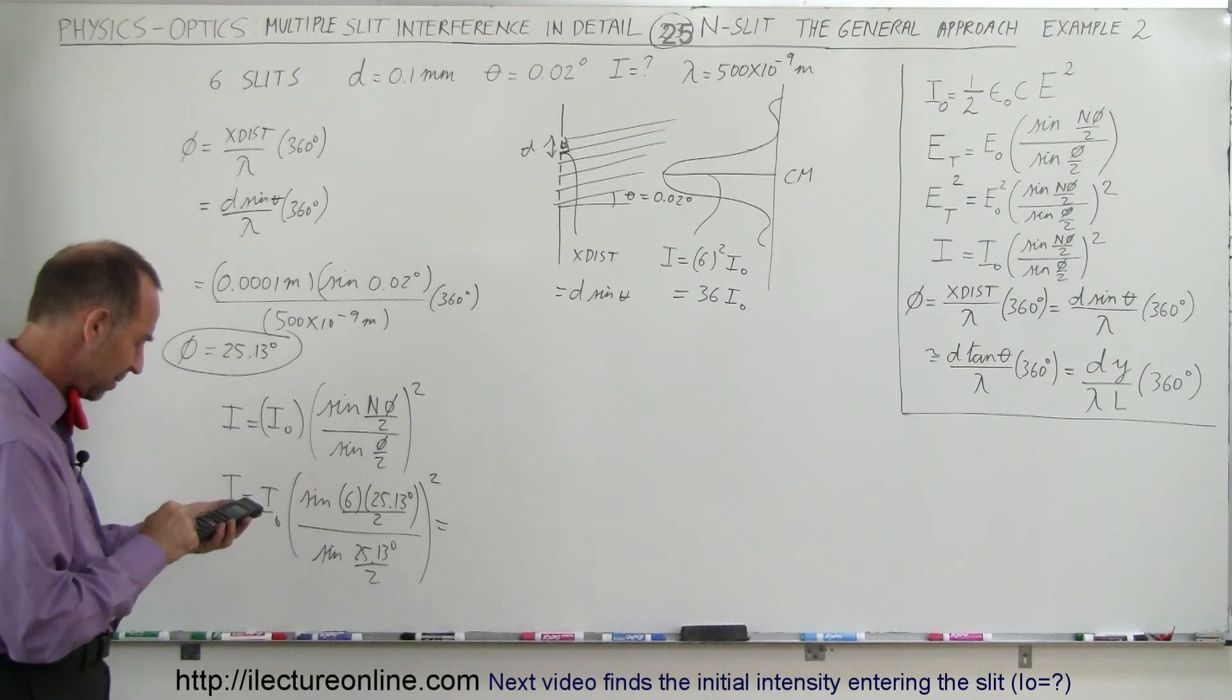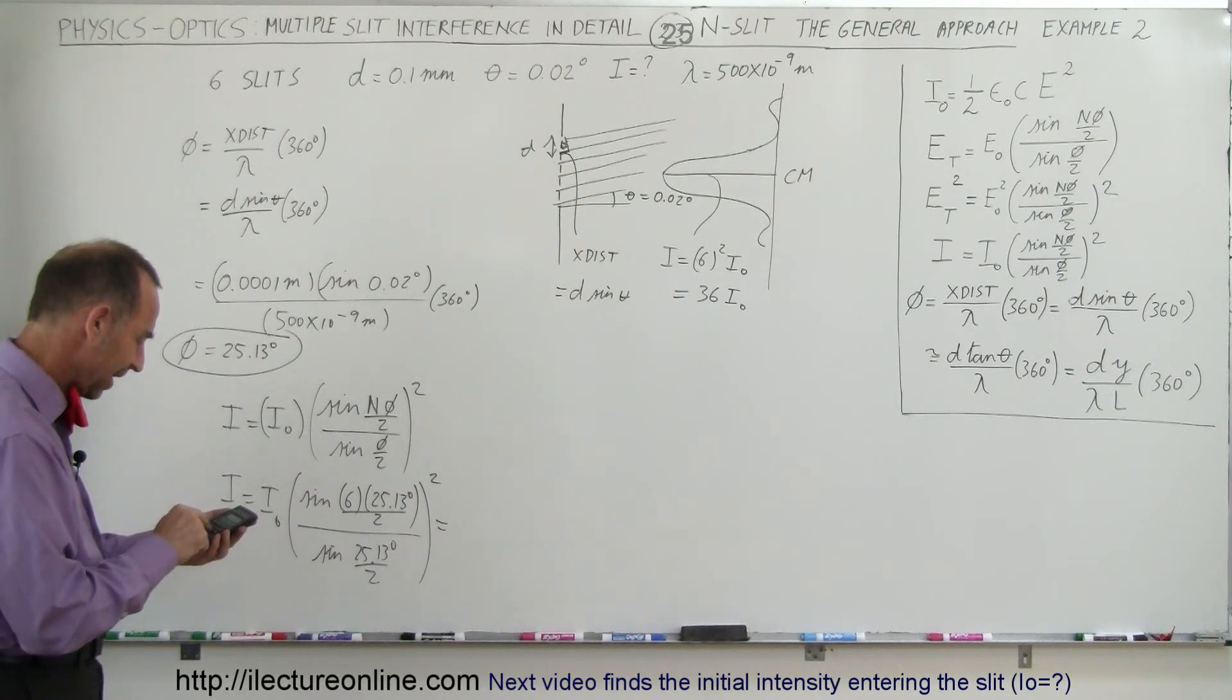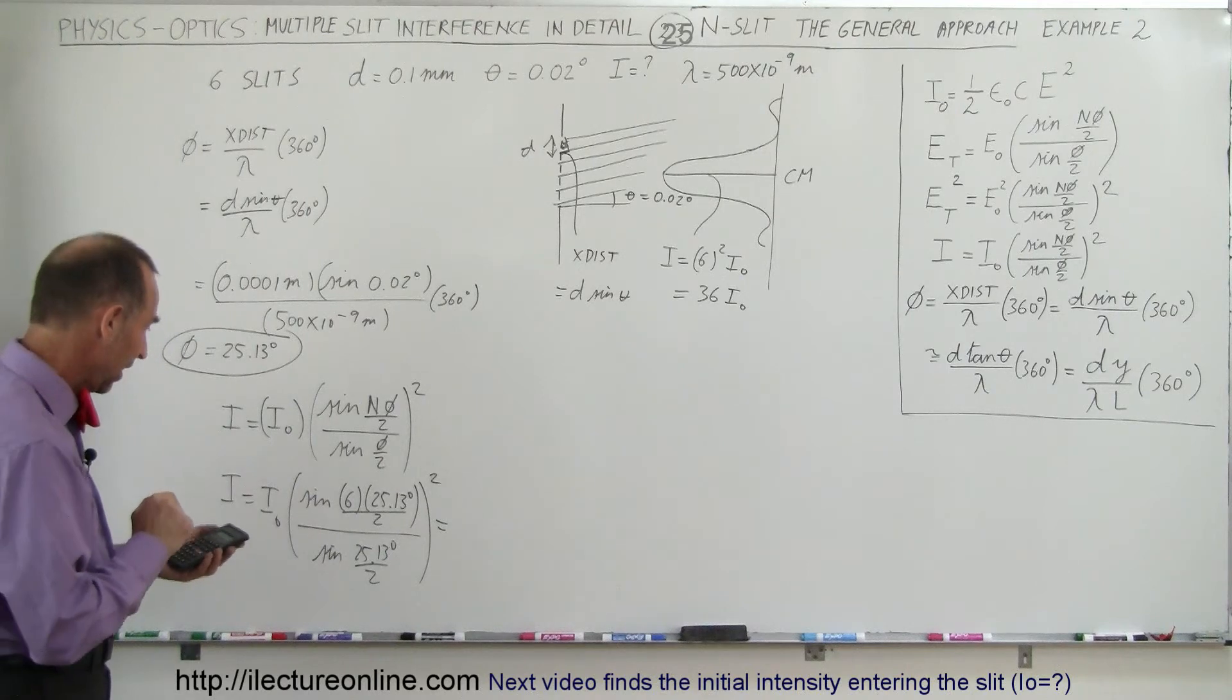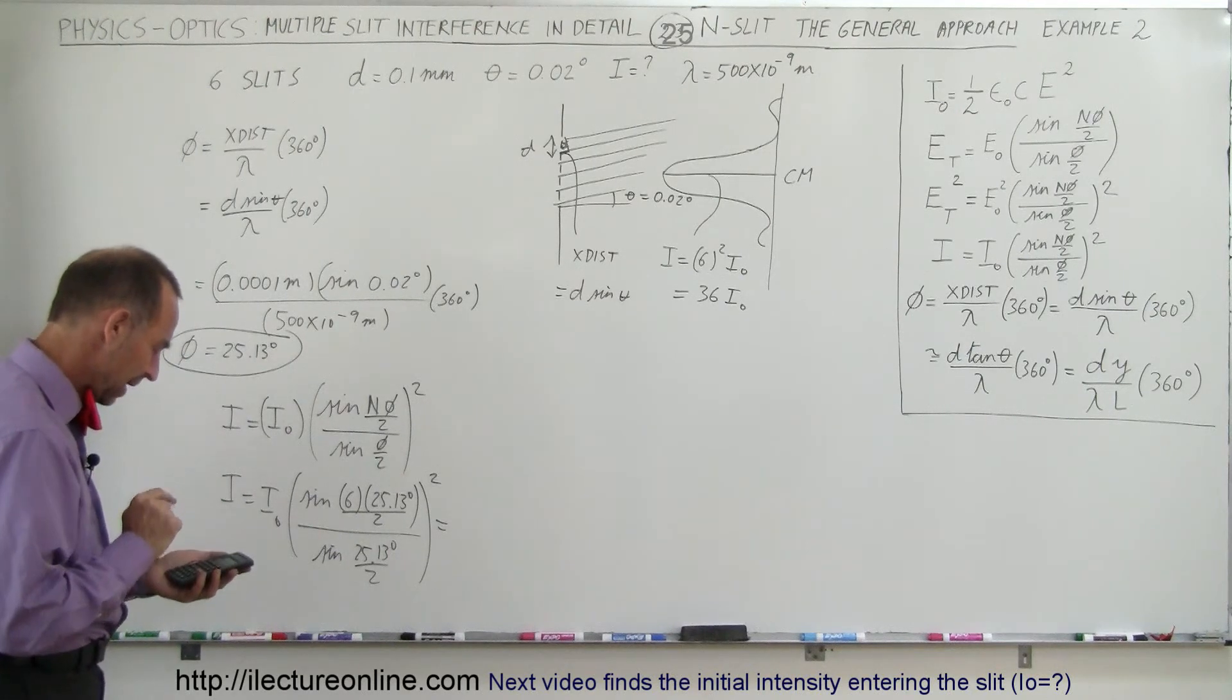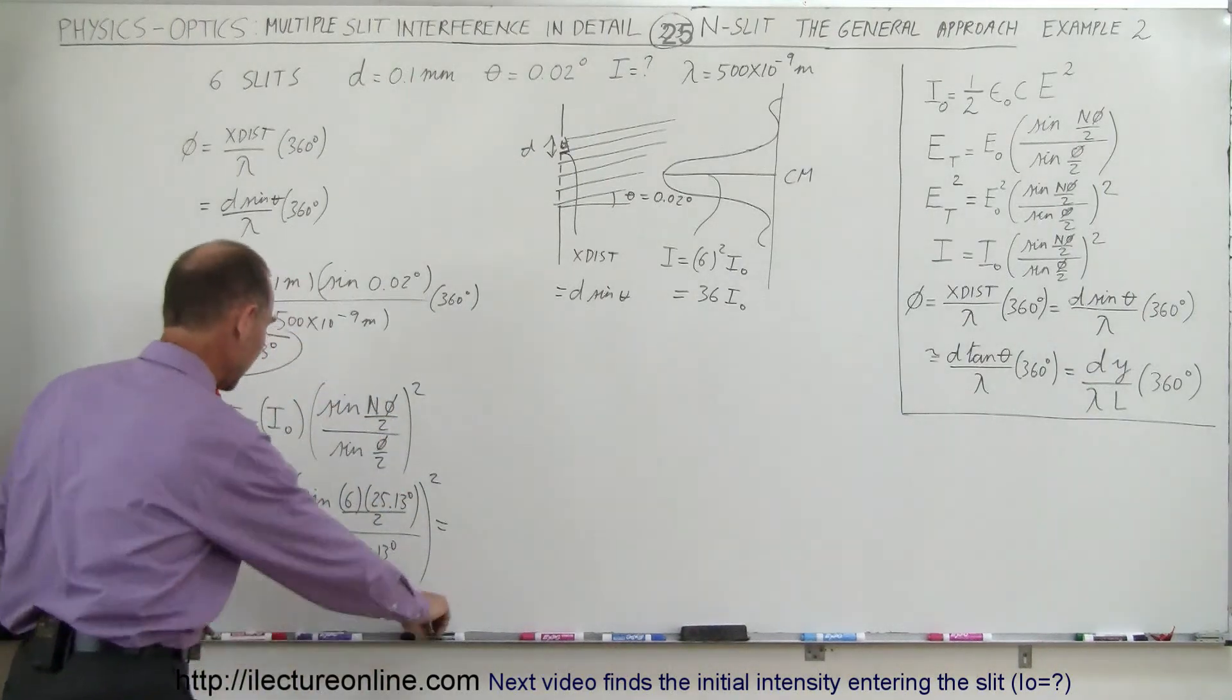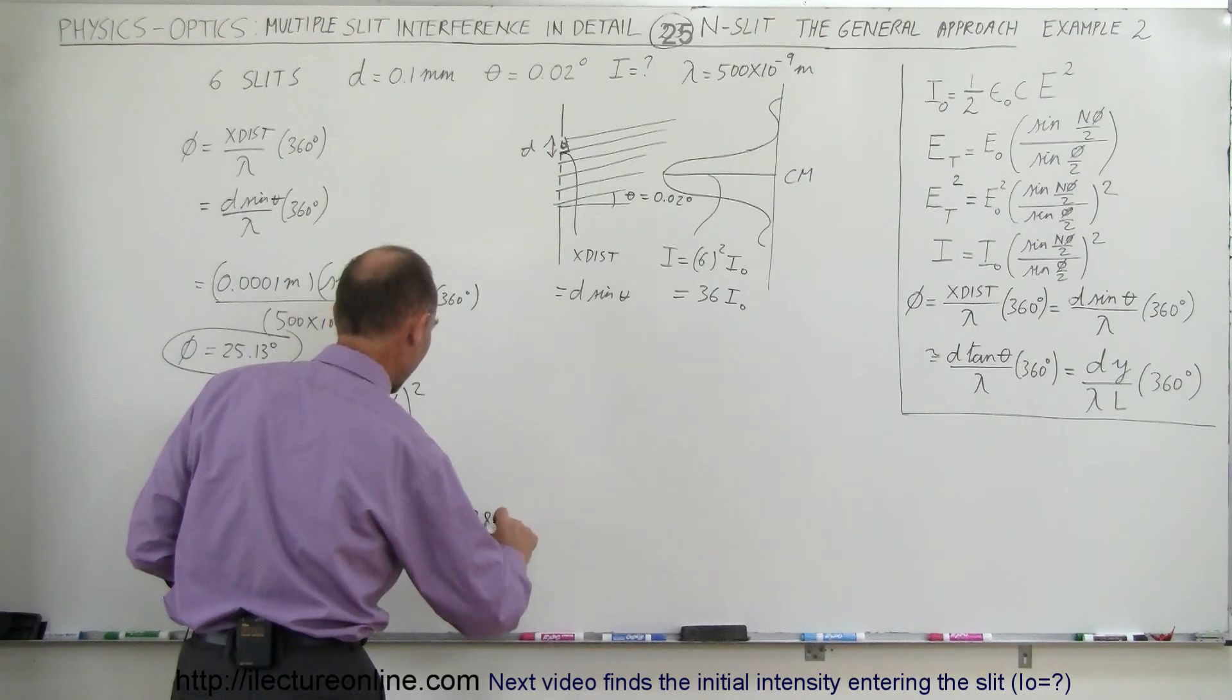...25.13 divided by 2, close the quantity, take the sine of that, and equals, and then we have to square that. And that gives us 19.78 or 19.8, yep, there we go.